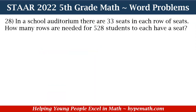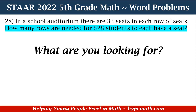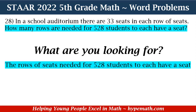In a school auditorium, there are 33 seats in each row of seats. How many rows are needed for 528 students to each have a seat? In order to solve this problem, the first thing we need to do is ask ourselves: what are we looking for? We are looking for the rows of seats needed for 528 students to each have a seat.